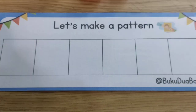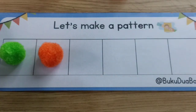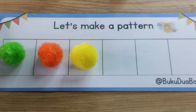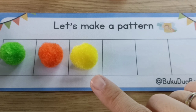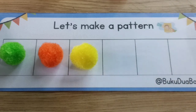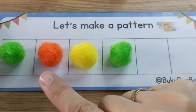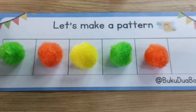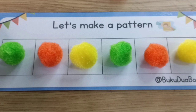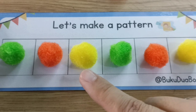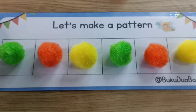Now, next pattern. Let's take green, then orange, then yellow. Now you can continue your pattern. Green, orange, yellow. So after yellow, check — it's green again. After green, orange. And after orange, what comes next? Yellow. Yes. Let's check the pattern: green, orange, yellow, green, orange, yellow. Yes, this is the pattern.